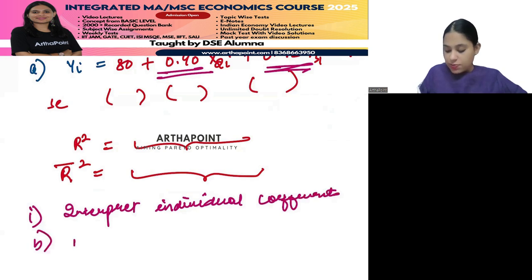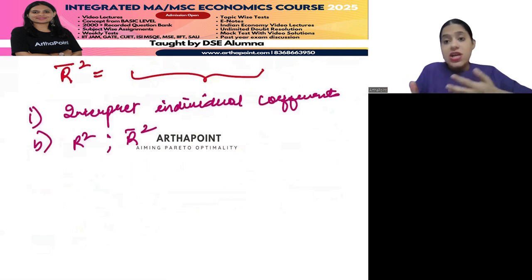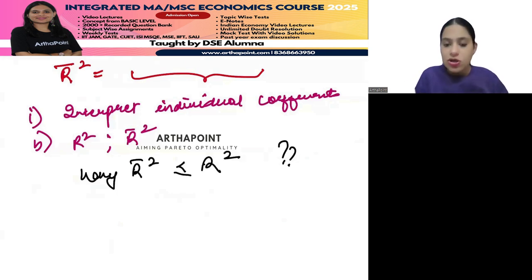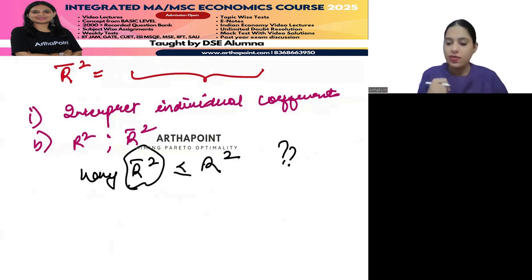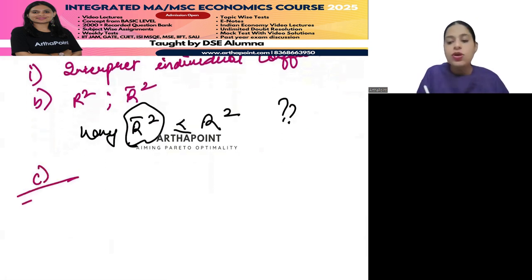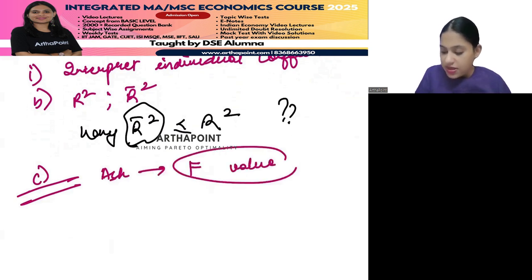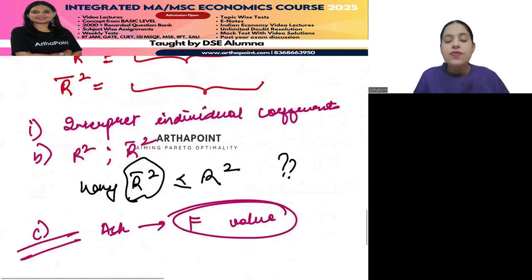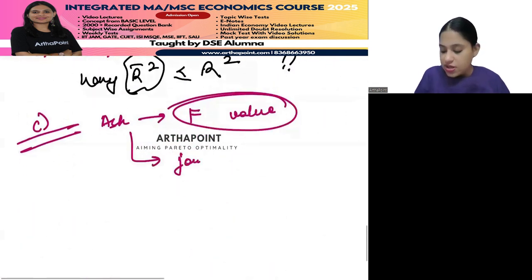They will ask you to interpret R-squared and R-bar-squared. Some adjusted R-squared related questions can be asked, like why R-bar-squared is always less than or equal to R-squared - because it takes into consideration degrees of freedom. Then they can ask you to find the F-value: from R-squared and the sample size you can find out F, and from the F-test they can ask you about joint significance.